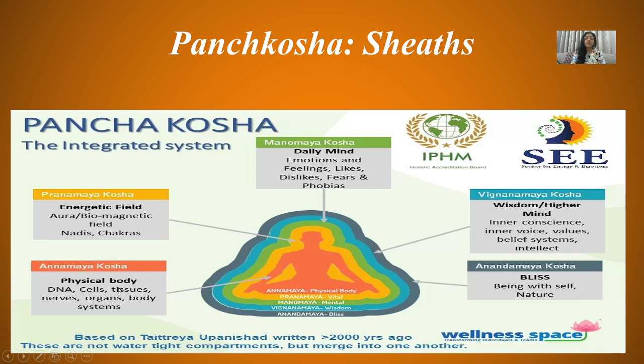The Annamaya Kosh is the physical body — DNA, cells, tissues, nerves, organs, and body systems. This is all Annamaya Kosh.